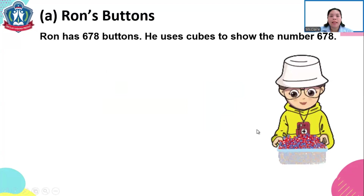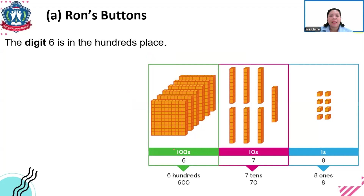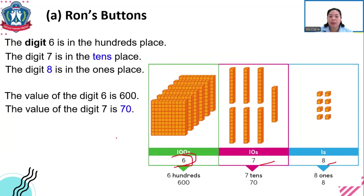Ron has 678 buttons. He uses cubes to show the number 678. We have 600, then we have 7 tens or 70, and 8 ones or 8. The digit 6 is in the hundreds place, the digit 7 is in the tens place, and the digit 8 is in the ones place.